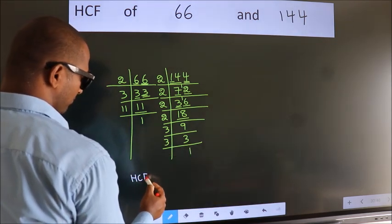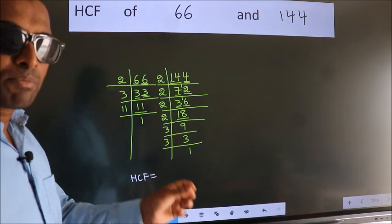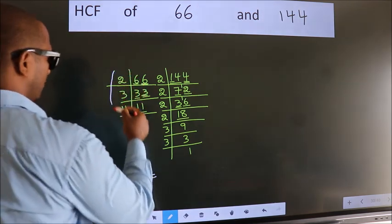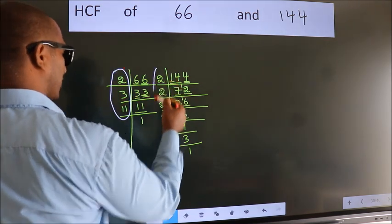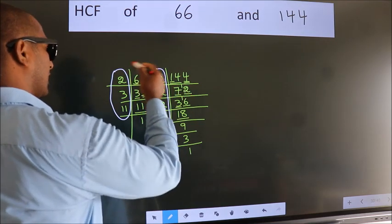our HCF is the product of the numbers which should be present over here and also here. Here and here.